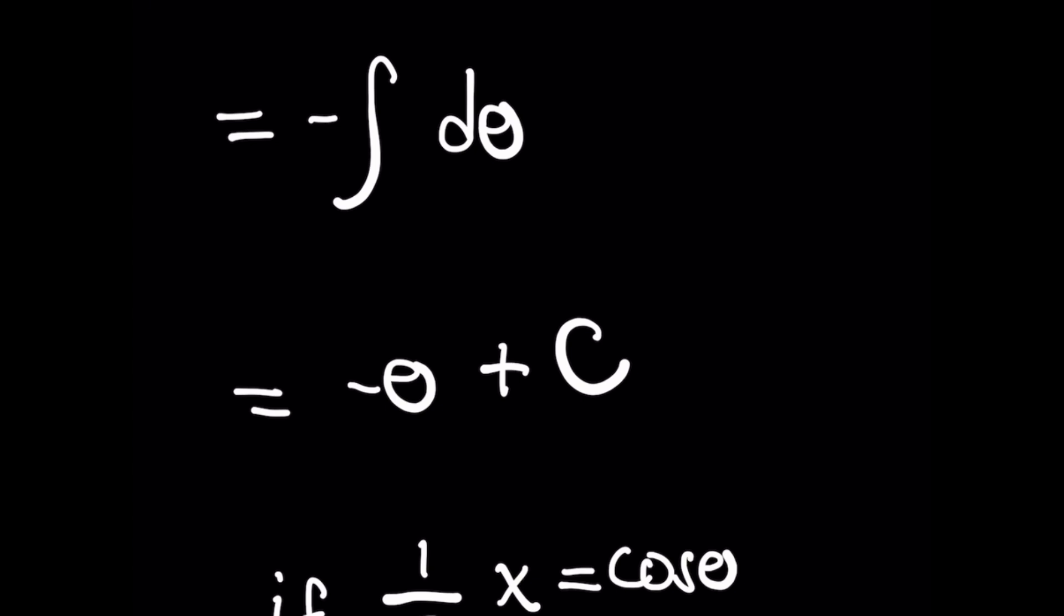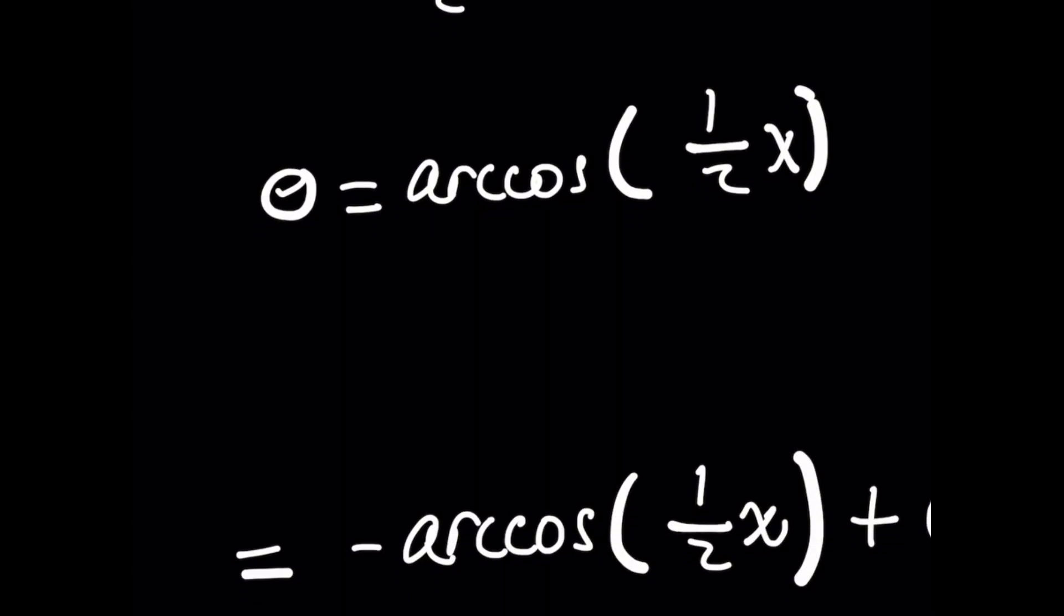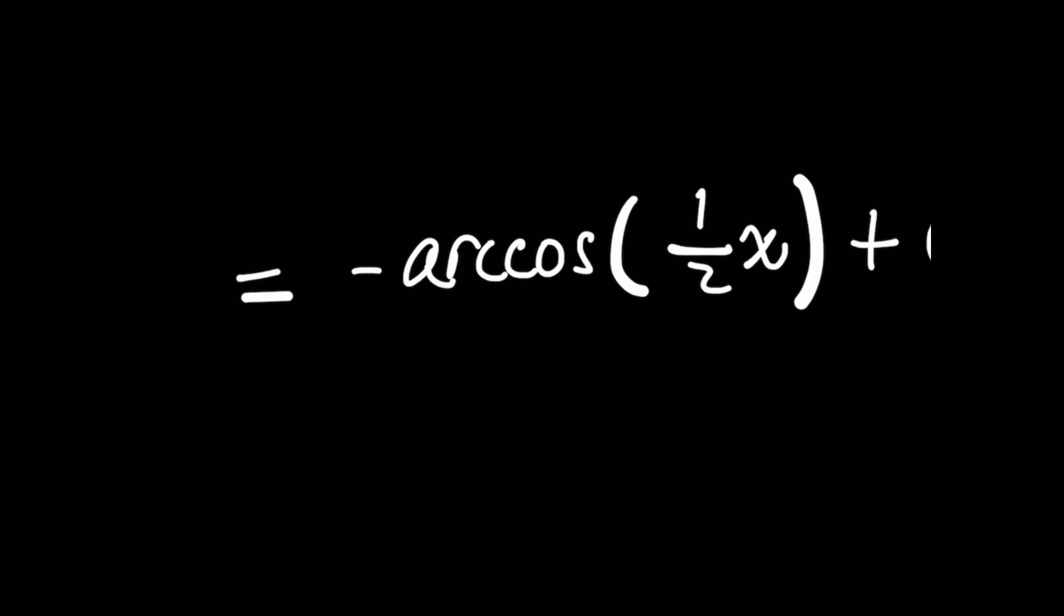a term for x because we can't solve this in terms of θ—the original problem was in terms of x. If you remember, we said above that (1/2)x = cos θ. So if you want to get rid of the cosine, you can undo that by taking the arccos of both sides and substitute that back in to give you the final answer: -arccos((1/2)x) + C. And